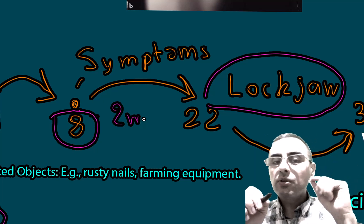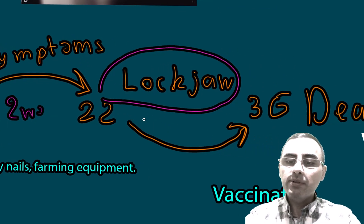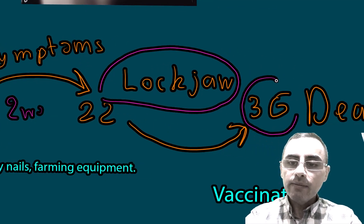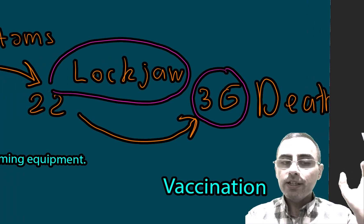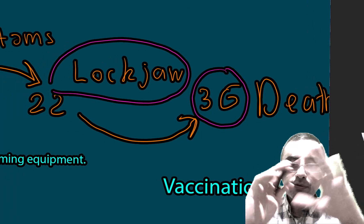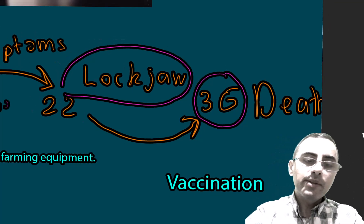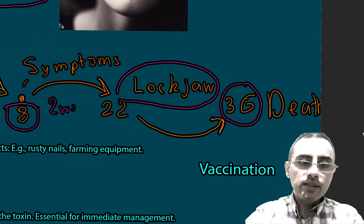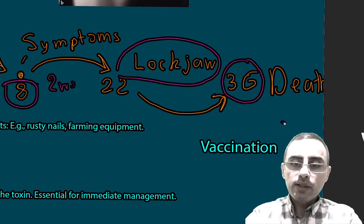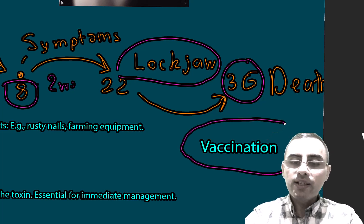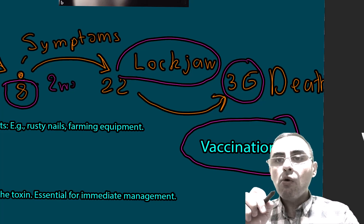After serious symptoms develop, it takes around two more weeks to potentially result in death. A person can die approximately four weeks after the first symptoms appear. That is the overall timeline of the disease.